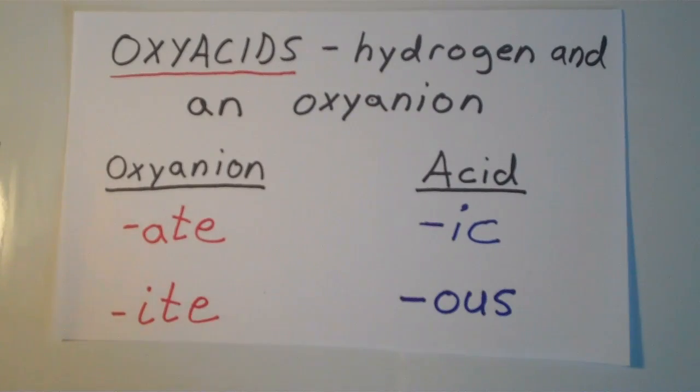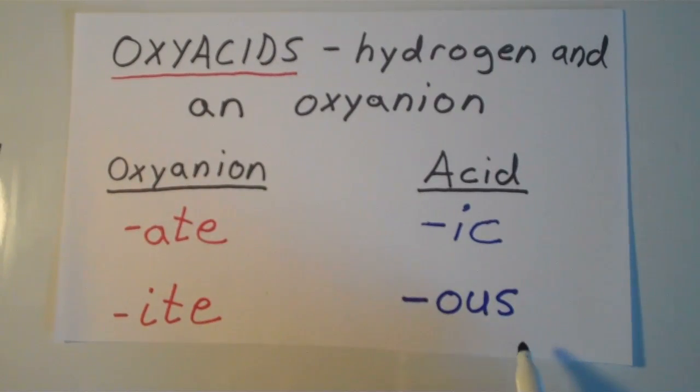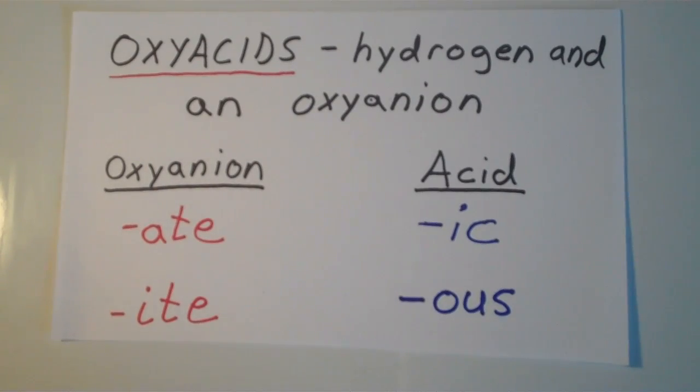And the general rule is that if our oxyanion ends in the suffix -ate, then we attach the suffix -ic to our acid, and then we tack on the word acid. If our oxyanion ends with -ite, then we use the suffix -ous, and we also tack on the word acid.